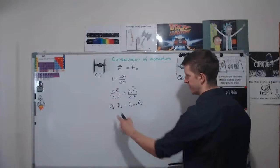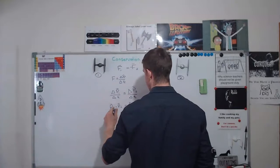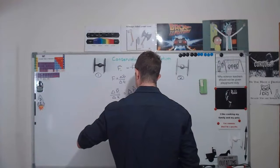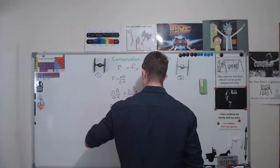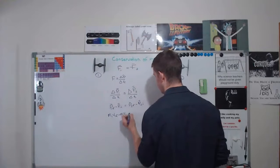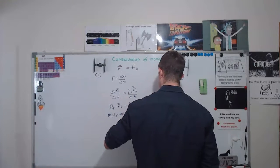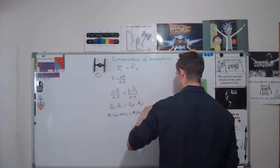Now if I go a step further and I can write what the P is. P is equal to M1 V1 final minus M1 V1 initial on the left. The right hand side is going to be equal to M2 V2 final minus M2 V2 initial.